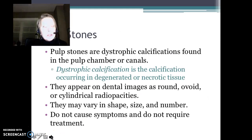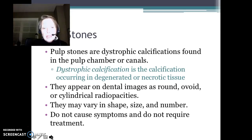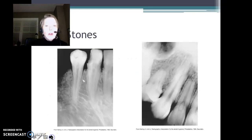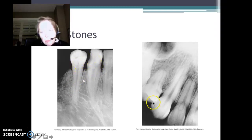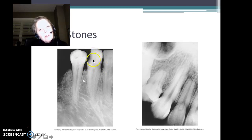Pulp stones are calcifications found in the pulp canals. They're dystrophic calcifications — calcification of necrotic tissue, of dead or dying, degenerating tissue. Pulp stones don't require treatment and cause no symptoms. We're looking at teeth 27 and 28 here. Do you see these oval calcifications in the pulp chamber? Those are pulp stones, related to trauma — in this case, the trauma of decay, probably long-term decay.